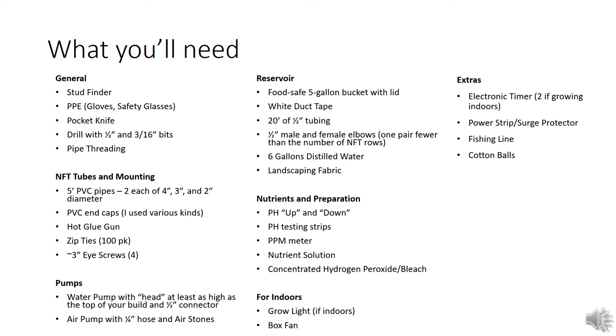These extras are specific to my build: I used fishing line running down the top of both NFT tubes to hold plants in place. I made 32 total holes - 16 in each two-inch diameter pipe, and eight holes for plants in the three-inch and four-inch pipes. I use cotton balls to plug empty holes, keeping debris out and preventing algae growth by blocking light.